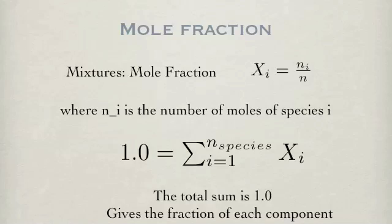For computations, it is often better to normalize so that the sum of the quantity is equal to 1. This gives a relationship between the quantities, like a percentage. The normalized quantity in terms of moles is called the mole fraction. By convention, the symbol x is used. The mole fraction is the fraction of the number of moles of the i-th species over the total number of moles. The sum of the mole fractions is equal to 1.